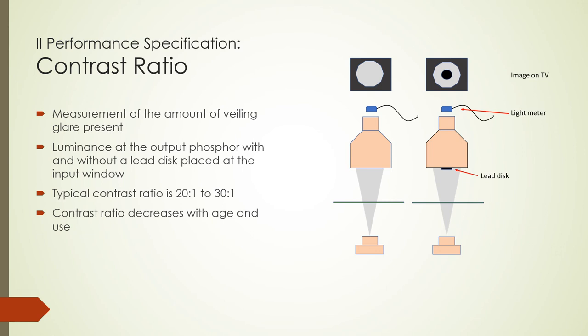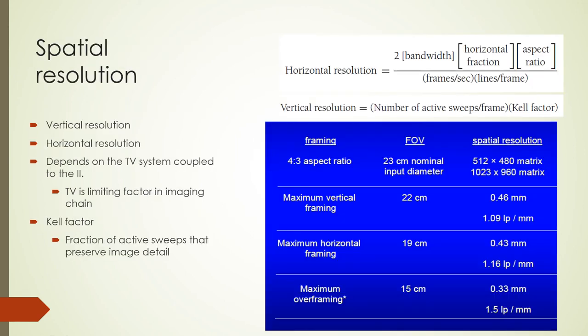In a fluoroscopy system based on an image intensifier and a TV camera, spatial resolution can be separated into vertical and horizontal components. Vertical resolution is the number of active sweeps per frame multiplied by the Kell factor — a fraction of active sweeps effective in preserving detail. Active sweeps are about 93 percent of the possible lines. Horizontal resolution has additional factors. The overall spatial resolution of the imaging system is limited by the capabilities of the TV system coupled to the image intensifier. A table shows what spatial resolution can be expected for a given field of view.